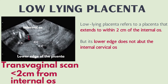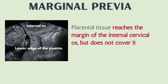Low-lying placenta refers to a placenta that extends to within 2 cm of the internal os, but its lower edge does not abut the internal cervical os. Transvaginal scans show the placenta's lower edge is less than 2 cm from the internal os. Marginal previa refers to placental tissue that reaches the margin of the internal cervical os but does not cover it.